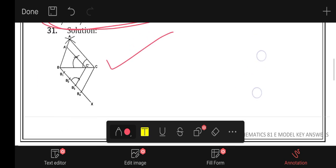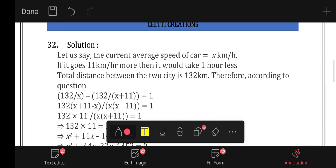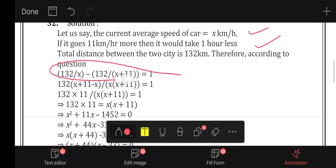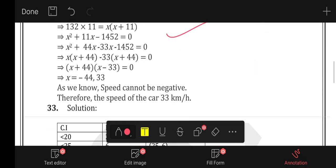Construction problem. Speed of the car: if it goes more it takes one hour less. Using cross multiplication factor, speed is 33 km per hour.